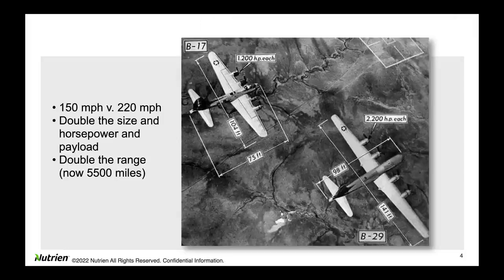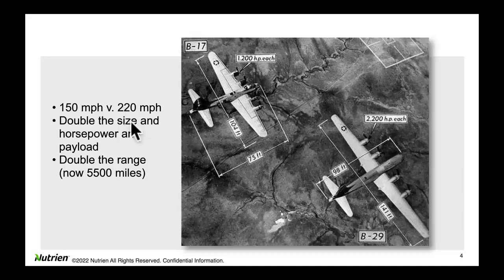I'd like to tell you a quick story that goes back to World War II. At the beginning of the war, the major U.S. bomber aircraft was the B-17 — they called it the Fortress. But in secret development, costing billions of dollars, we created the Super Fortress, the B-29 bomber. It was faster, double the size, double the horsepower, could carry double the payload. And most critically, it could fly twice as far. This was the great equalizer in the newly formed Air Force for the United States military.